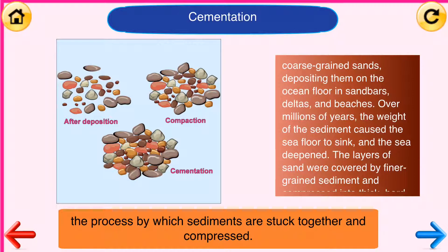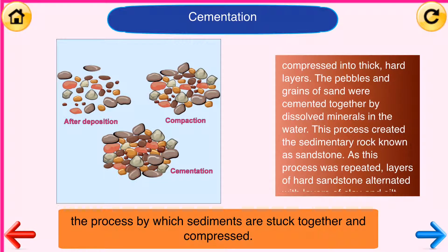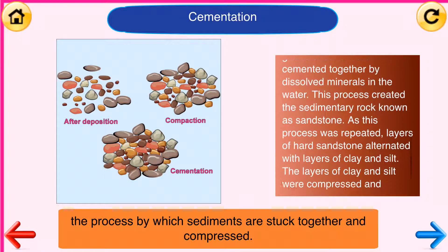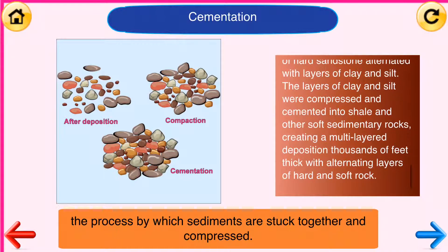The layers of sand were covered by finer-grained sediment and compressed into thick, hard layers. The pebbles and grains of the sand were cemented together by dissolved minerals in the water, creating the sedimentary rock known as sandstone. As this process was repeated, layers of hard sandstone alternated with layers of clay and silt, which were compressed and cemented into shale and other soft sedimentary rocks, creating a multi-layer deposition thousands of feet thick.